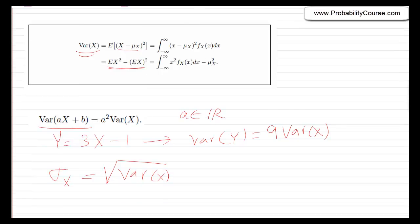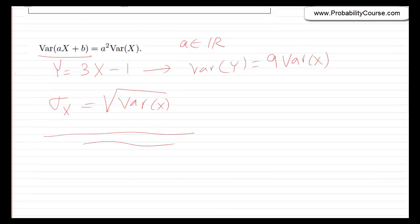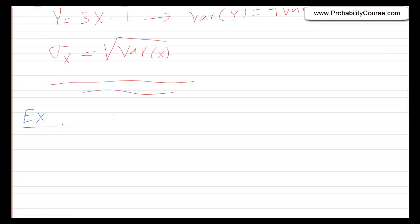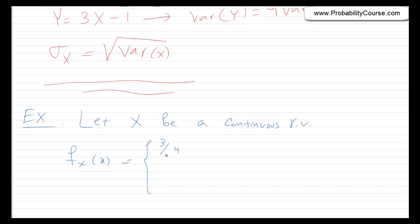Let's look at an example to make sure we can do all these calculations. Let x be a continuous random variable with pdf f_X(x) equals 3 over x to the 4, for x greater than or equal to 1, and 0 otherwise. The question is: what is the variance of x? I suggest that you find the variance before watching the rest of the video.